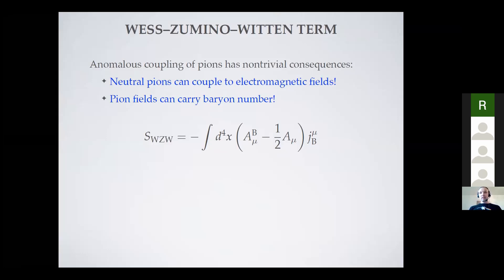To implement the effects of the anomaly in the effective theory, we use the so-called Wess-Zumino-Witten term. The one thing we learn about anomalies in quantum field theory is that the anomaly can make electrically neutral particles interact with electromagnetic fields — for instance, the chiral anomaly is responsible for the decay of neutral pions to two photons.